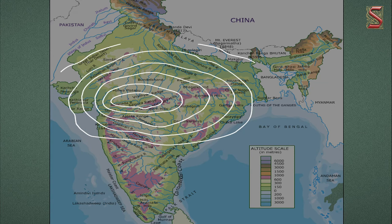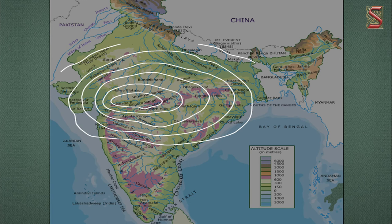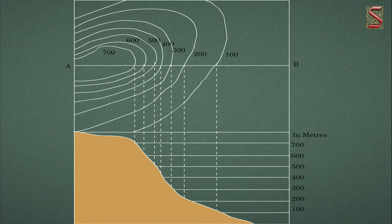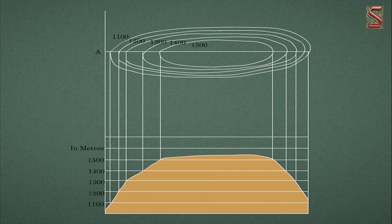Did you know how we can show high and low places on maps? The high and low places on the surface of the earth are called relief features. Contours are lines on maps joining places of the same height measured from sea level. Contour lines are also known as iso lines — that is, lines joining places with some common features.